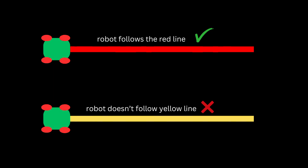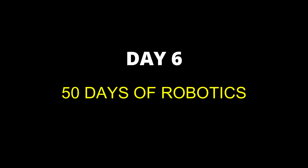If the line is not of red color then the robot will not follow. Hello everyone, in this video we are going to start with Day 6 of 50 Days of Robotics.